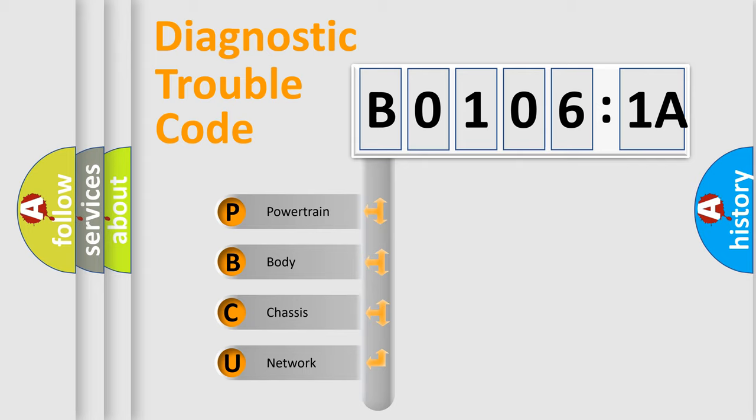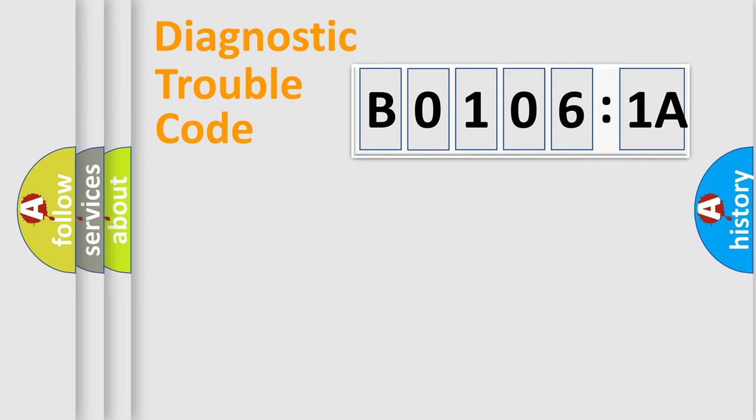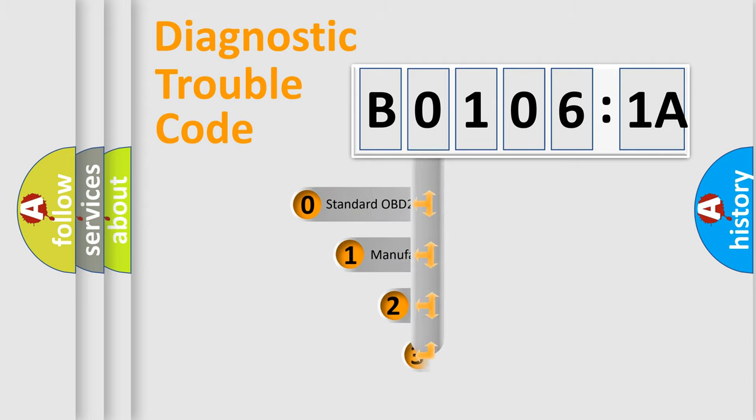We divide the electric system of automobile into four basic units: powertrain, body, chassis, and network. This distribution is defined in the first character code.